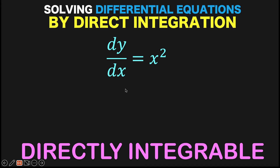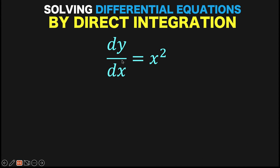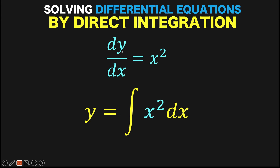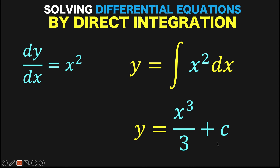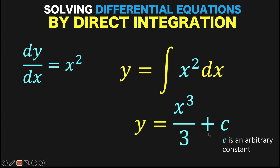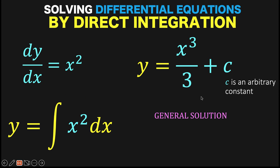To summarize the process: this method is applicable when the given differential equation is directly integrable. We take the antiderivative of both sides of the equation. Since differentiation and integration are inverse operations that cancel each other out, the left side is simply y of x, and the right side equals the antiderivative of x squared dx, which is x cubed over 3 plus c. Here c is an arbitrary constant, meaning there are many different equations that are solutions to this differential equation depending on the value of c. We call this the general solution to the differential equation.